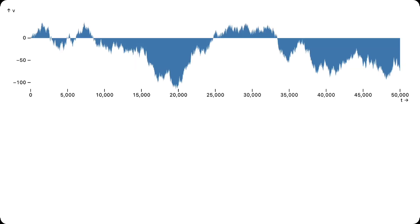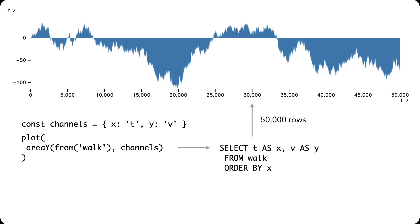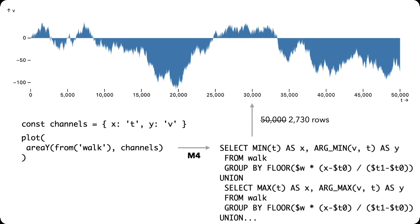For example, we can create this chart using an area-y mark. A basic query selects all data points, here resulting in 50,000 rows. In Mosaic, the area mark instead applies M4 optimization, performing pixel-aware binning to reduce the data by over an order of magnitude. This is an example of a local optimization based on known semantics of the visualized data.